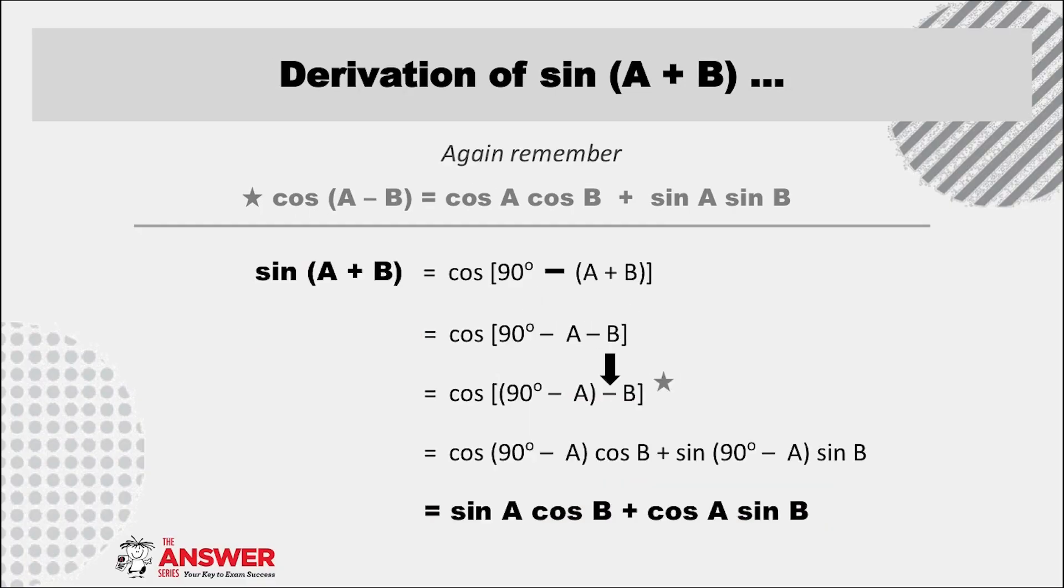If we switch over now to looking at the sin compound angles, the first step is again to aim towards writing it as the cos of the difference of two angles. But how do we get there? First, we have to apply co-ratios. So sin of an angle, remember, is cos(90° - that angle). So sin(A + B) is cos[90° - (A + B)].